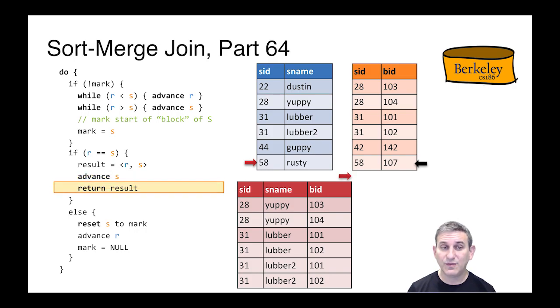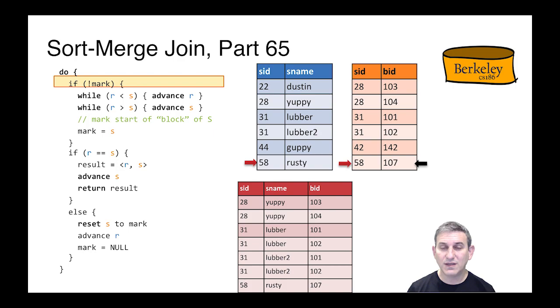S is now pointing to end of file, but that result is part of the output. And the next time we get called, we'll find that we're already at end of file when we start advancing R, and we'll declare end of file for this iterator. And we're done.